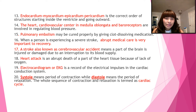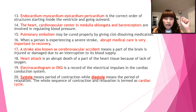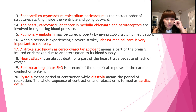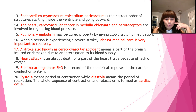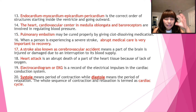Number fourteen: the heart, cardiovascular center in the medulla oblongata, and the baroreceptors are all involved in regulating blood pressure. If asked what organs or parts of the body regulate blood pressure and there is an 'all of the above' choice, select that. Number fifteen: pulmonary embolism may be properly treated by administering clot-dissolving medication.